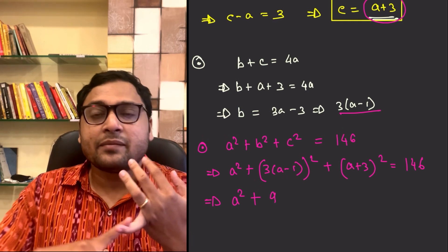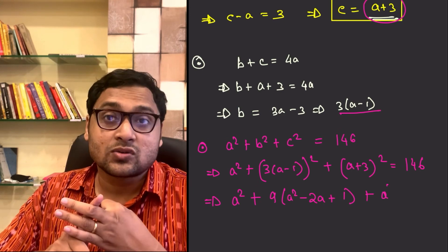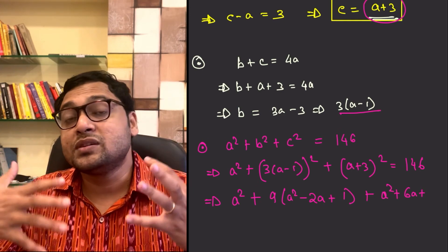So, we have A plus 3 whole square. So, we have A square plus 9 times A minus 1 whole square plus A plus 3 whole square. This turns out to be 146.